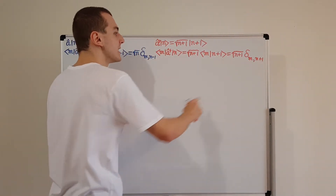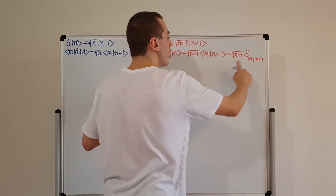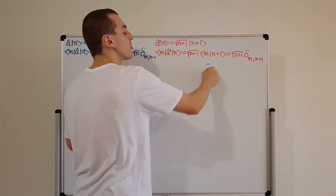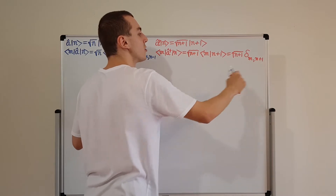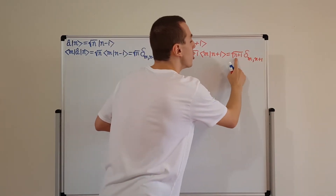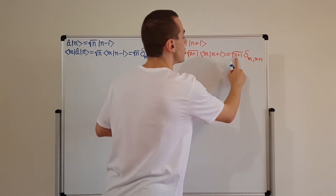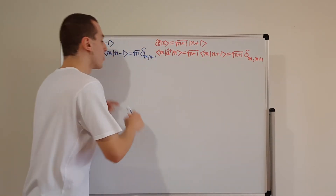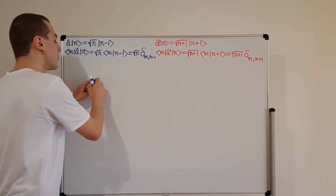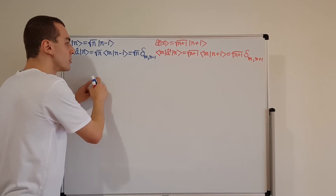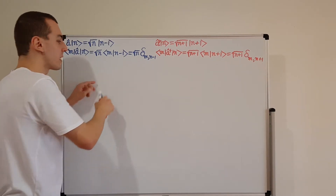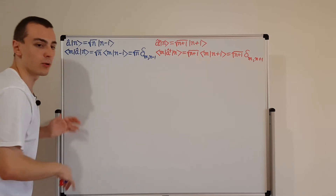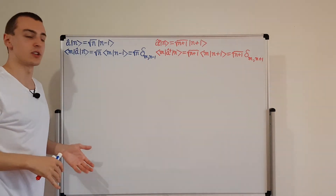So we have all the information we need to construct the matrix representations. These numerical values n can go from 0, 1, 2, 3, and so on — they are non-negative integers. That is an important point. So when we construct our matrices, the first entry is going to be 0,0. We're going to have 0, 1, 2, 3, 4 as the rows and 0, 1, 2, 3, 4 as the columns.